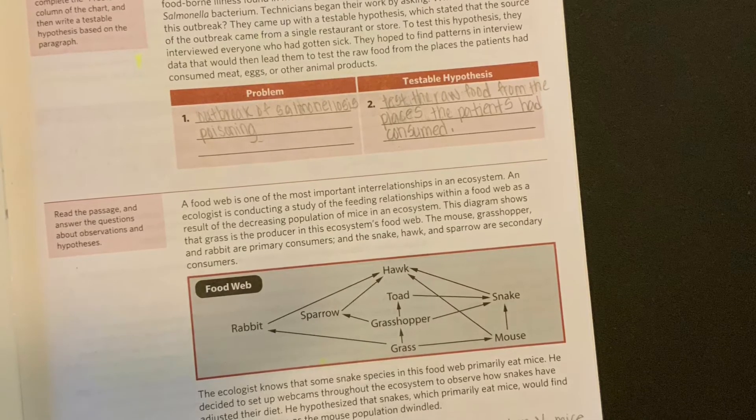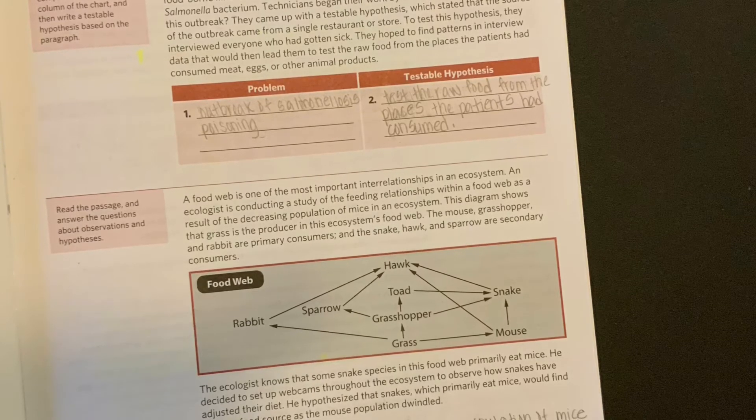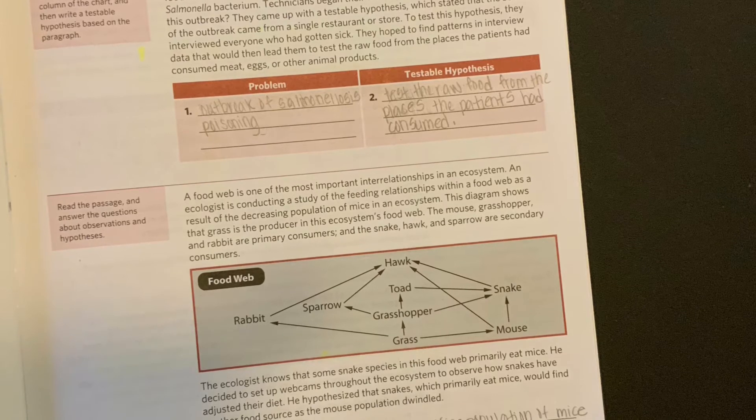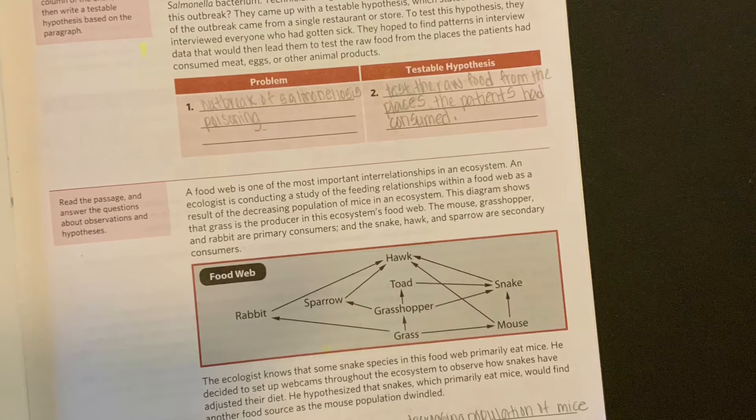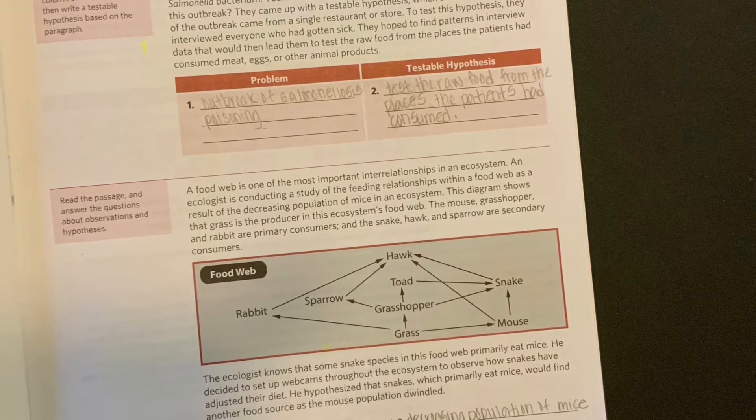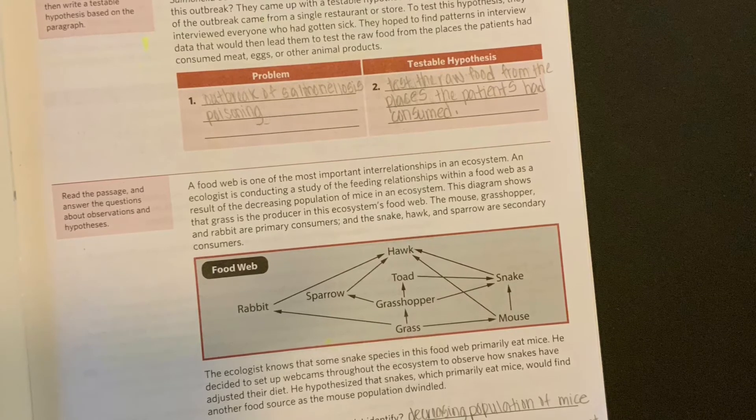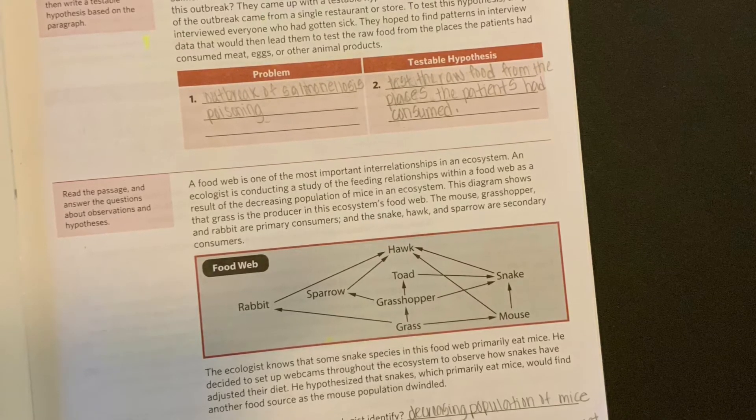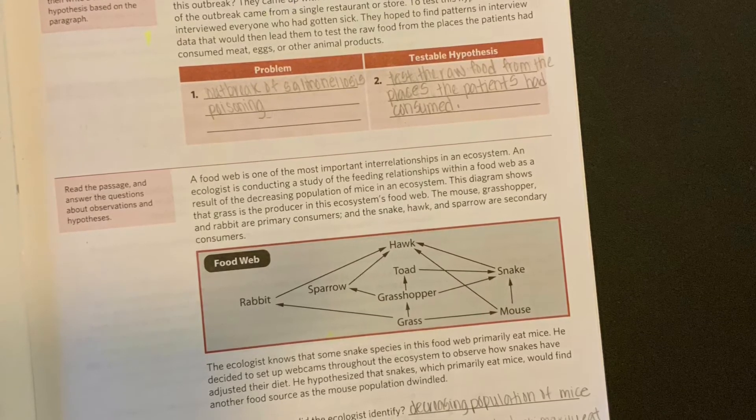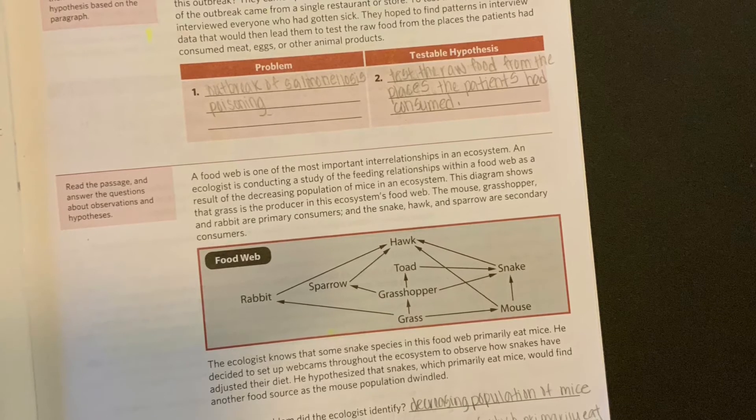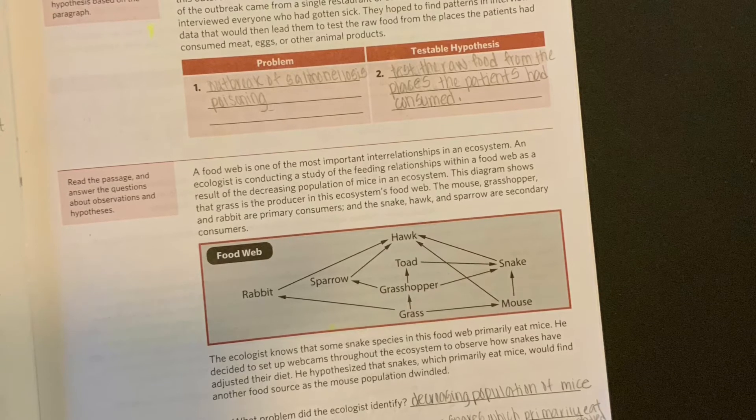Okay, so this is another example of a hypothesis scenario. So you have a problem and then you have a testable hypothesis. What was the problem? The problem was the outbreak of salmonellosis poisoning. So that was the problem, the poisoning was the problem. And what was the testable hypothesis? The testable hypothesis was that they tested the raw food from the places the patients had consumed. So they had to actually go through with what they wanted to find out for what even caused the outbreak of it.